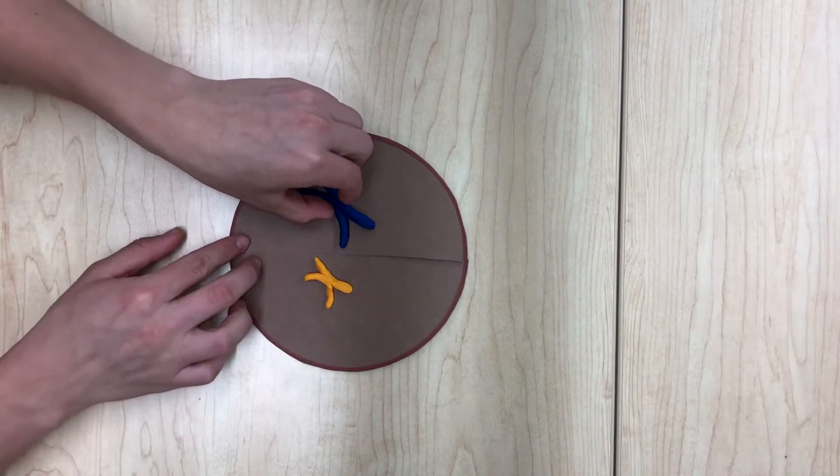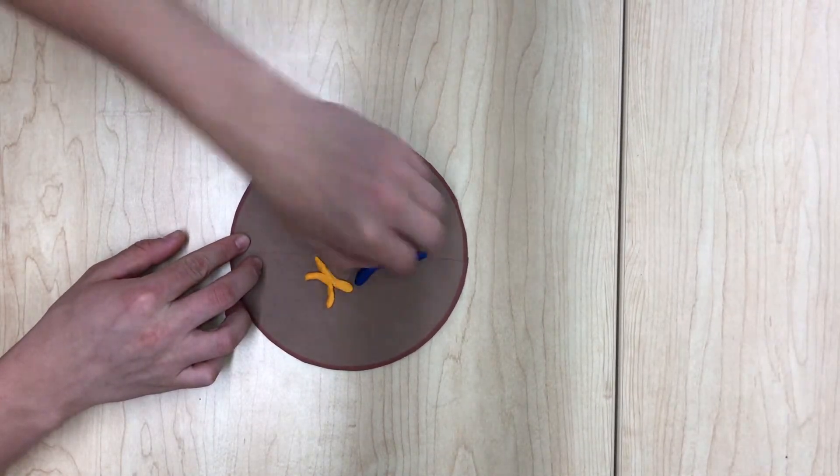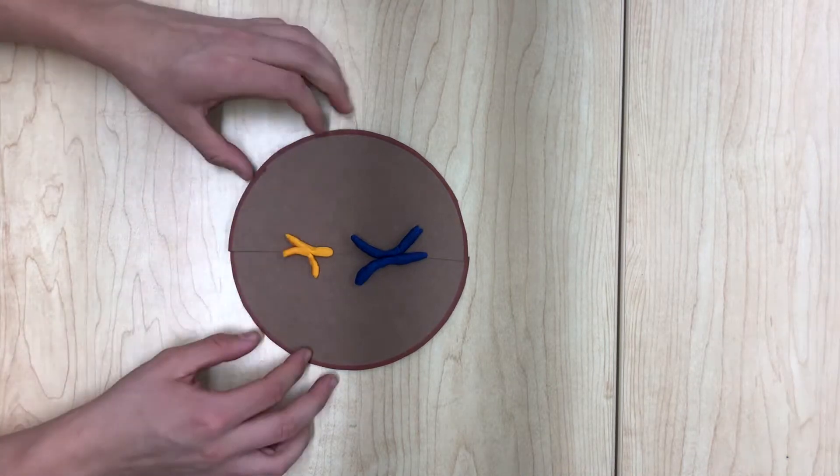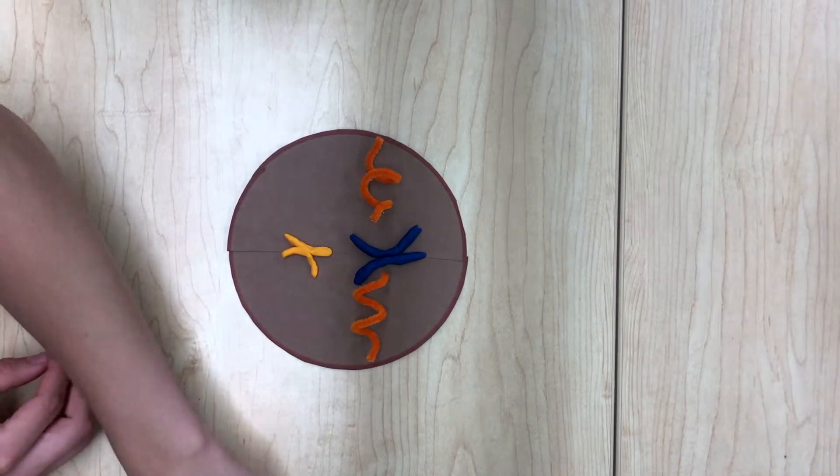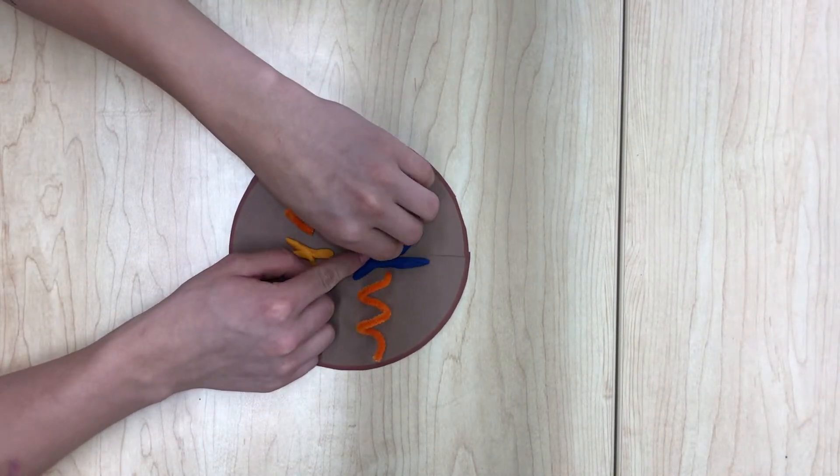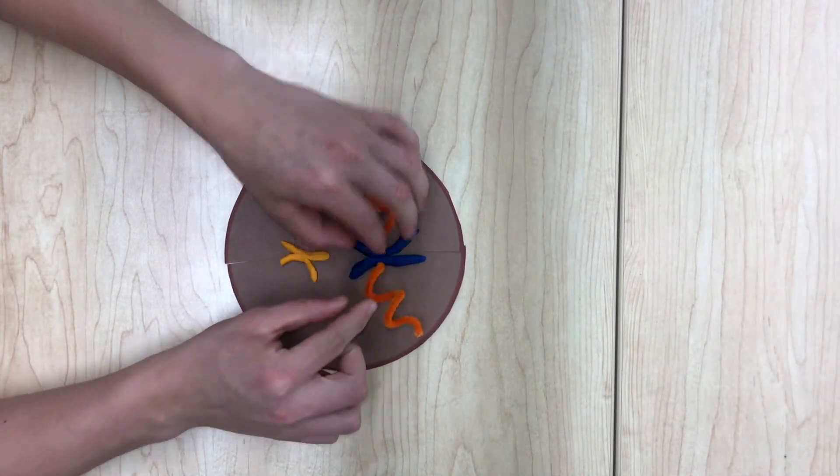After prophase is metaphase. In metaphase the chromosomes are lined up in the middle of the cell and the cell prepares to divide by creating the spindle fibers which will later drag the chromosomes apart during anaphase.